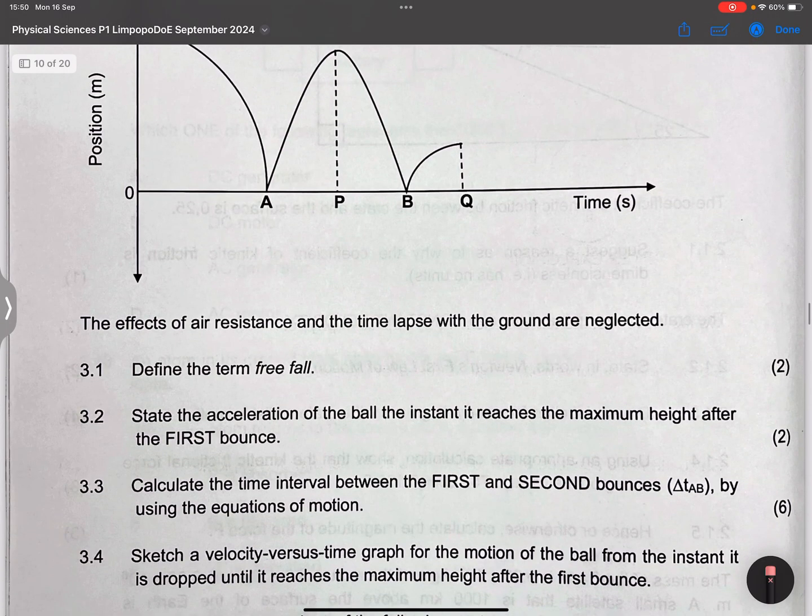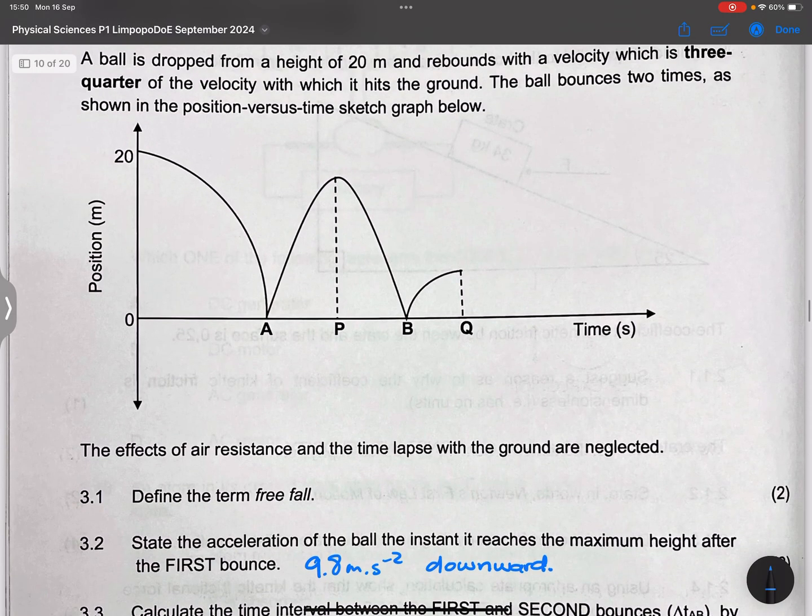They say state the acceleration of the ball at the instant it reaches the maximum height after the first bounce. Remember acceleration at any given point except when it touches the ground, the acceleration is 9.8 meters per second squared and it's always going to be downwards. Even at maximum height the velocity would be zero, but it's still accelerating at 9.8 even at that point.